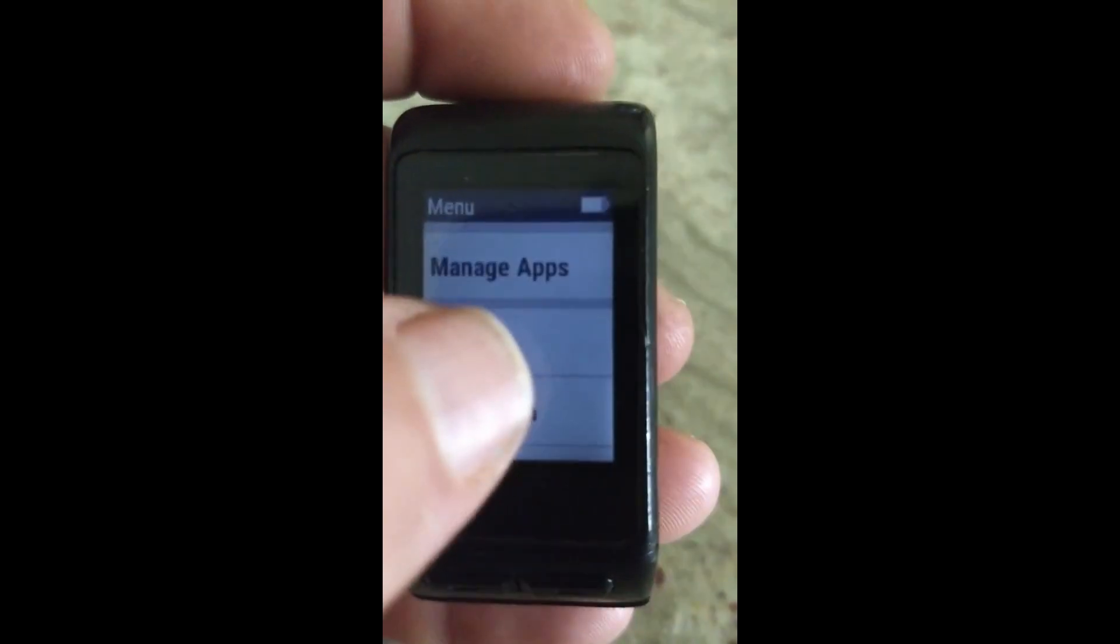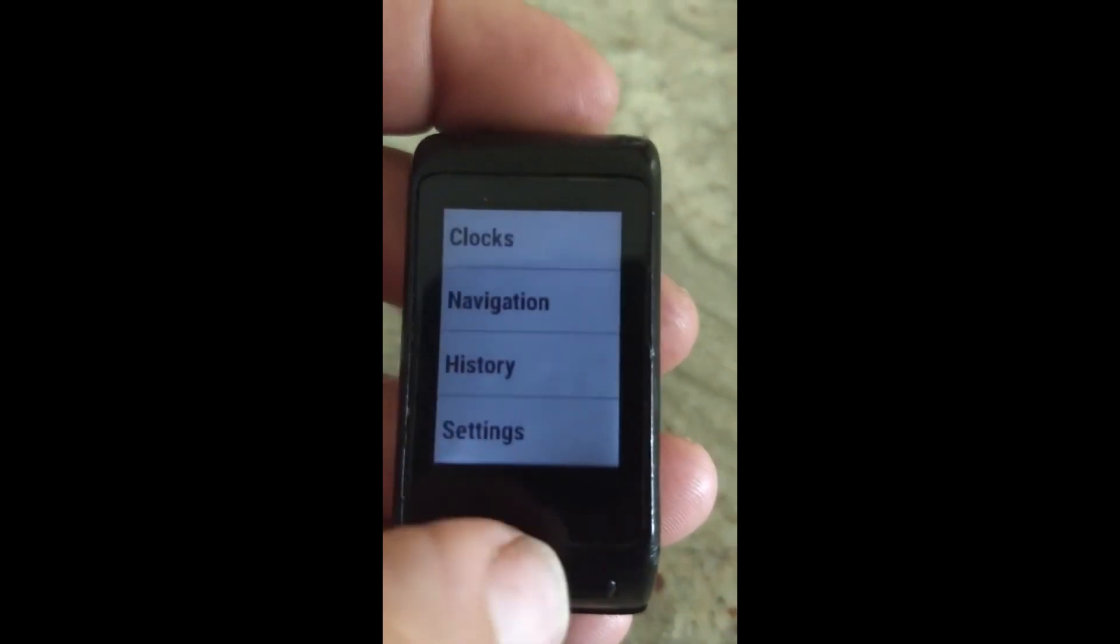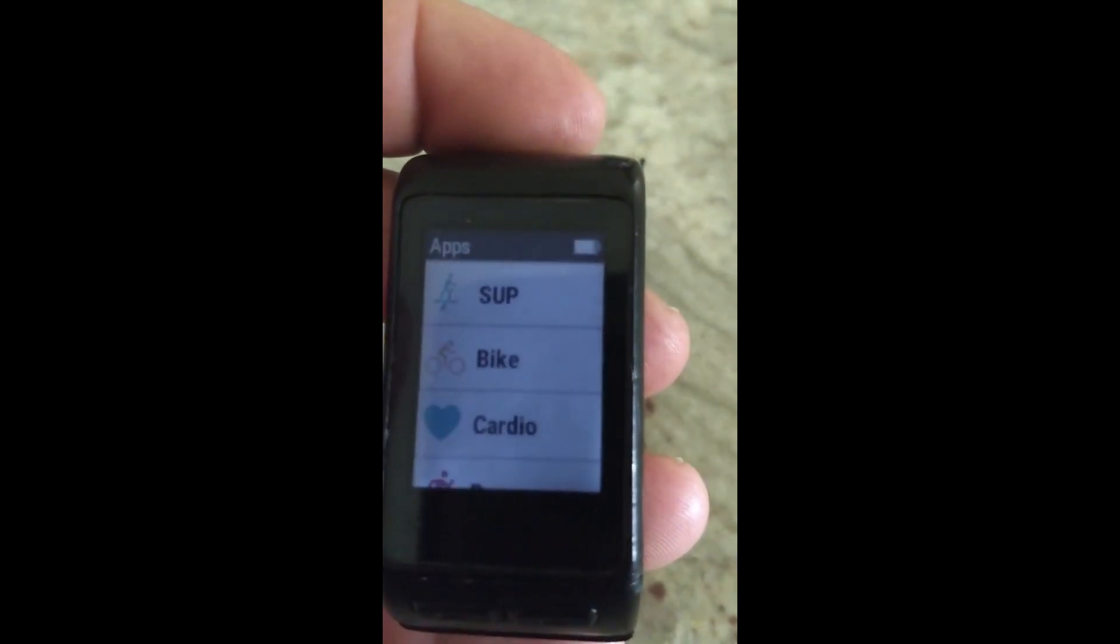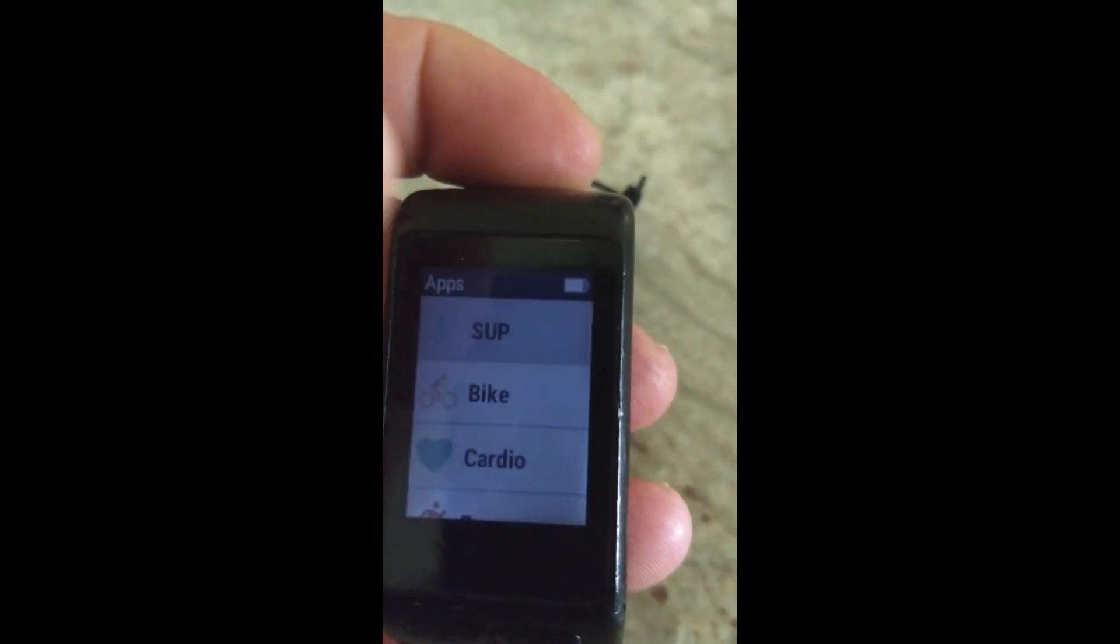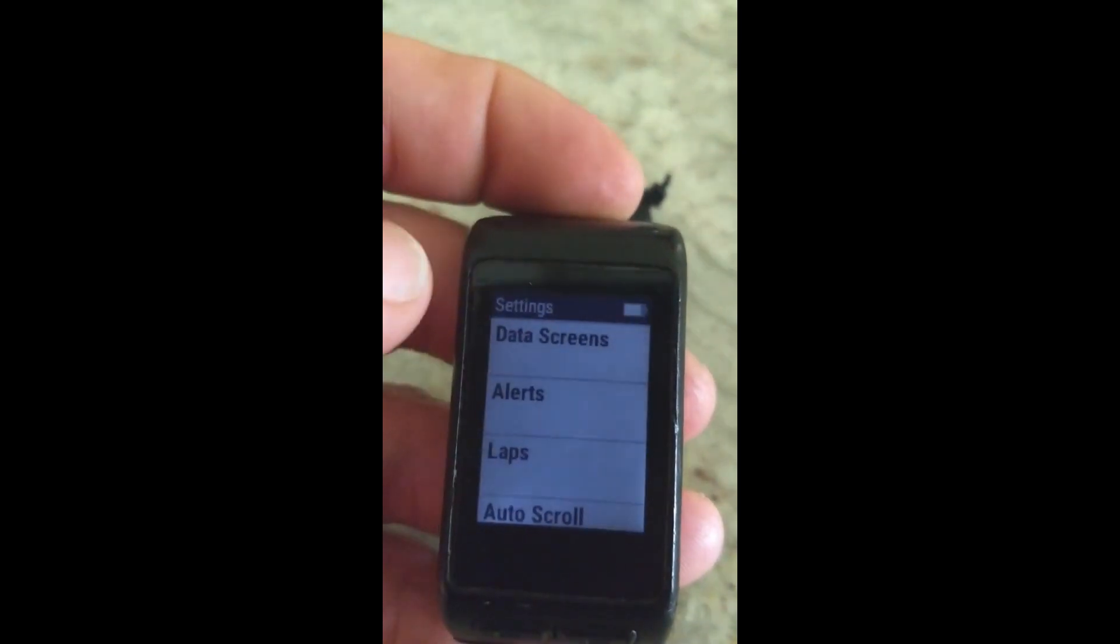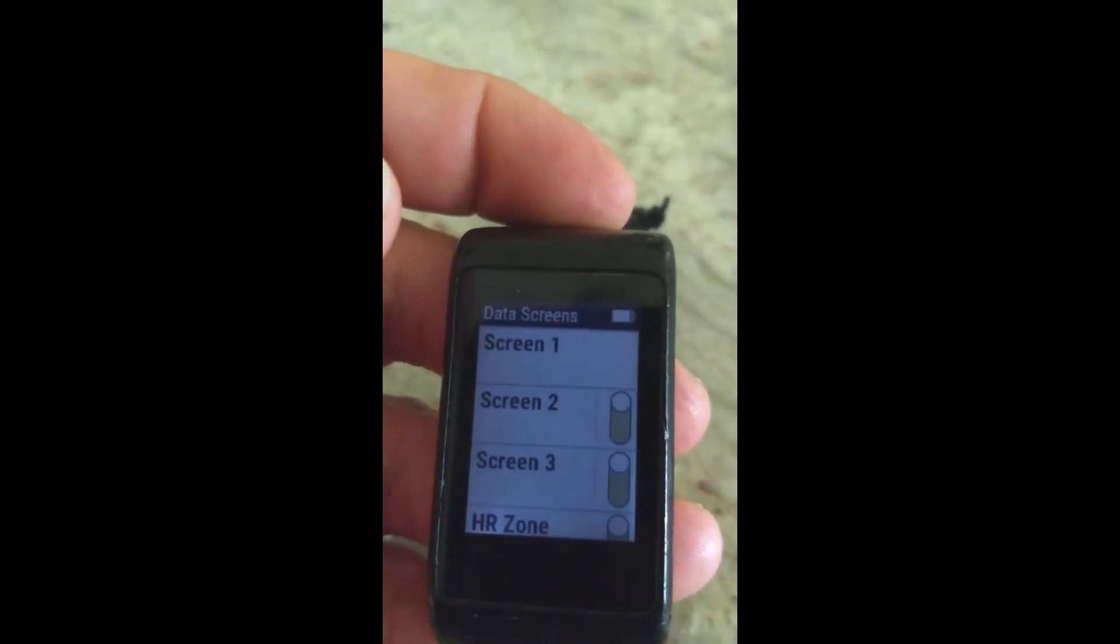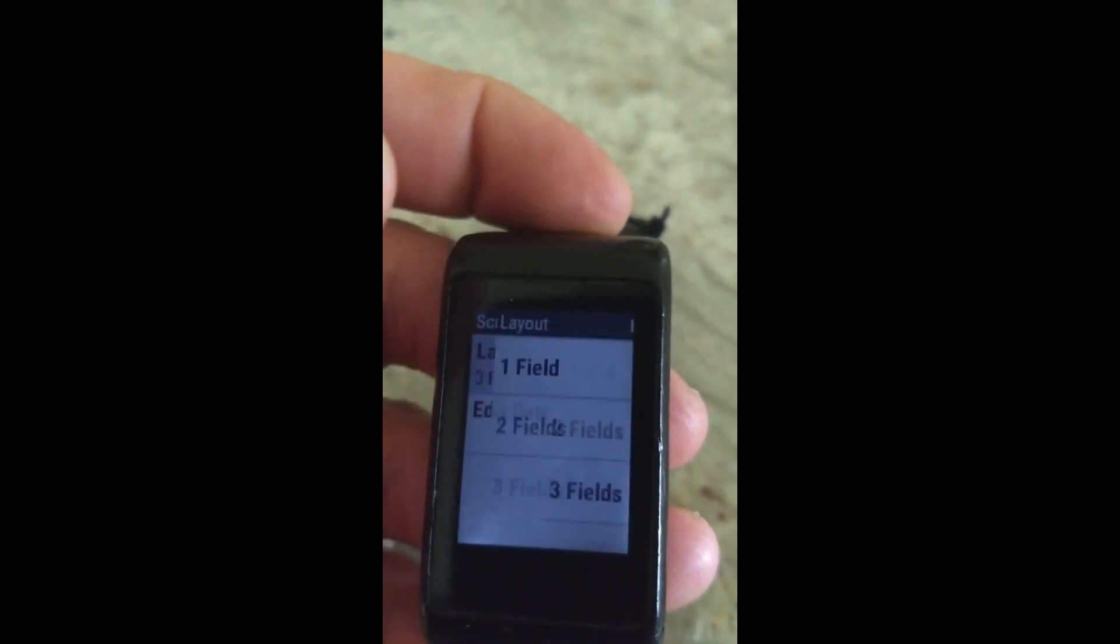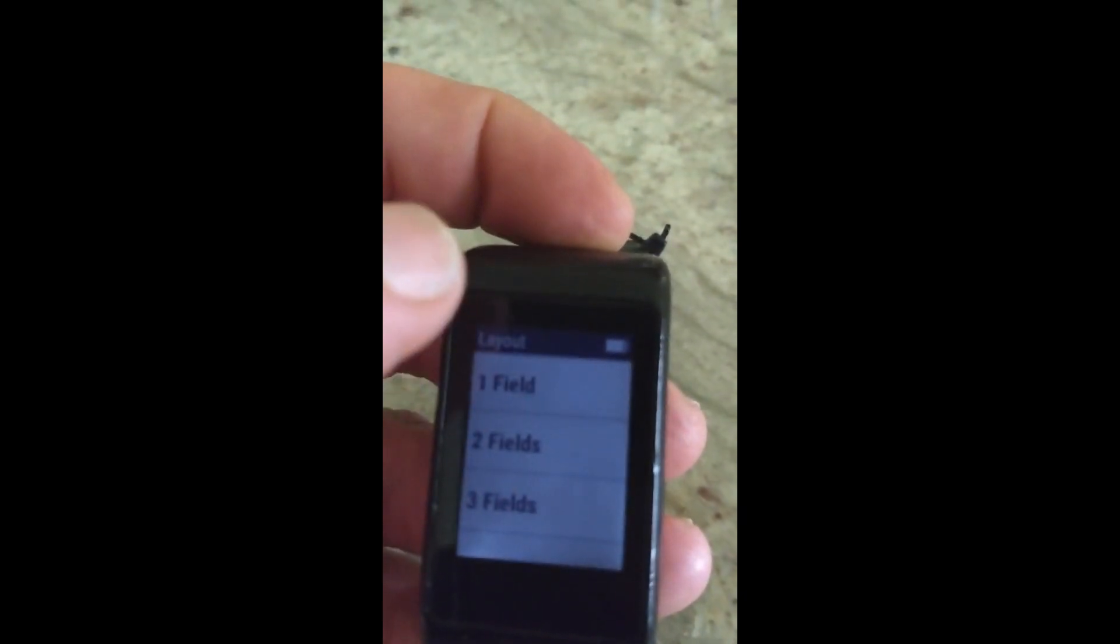But first on your device you have to configure the application you want to use for the field. So go to the settings, select the apps, and in this case we'll just do stand up paddle and we're going to add this data field in. So we go to data screens, let's select screen 3, then from there you want a single field layout.